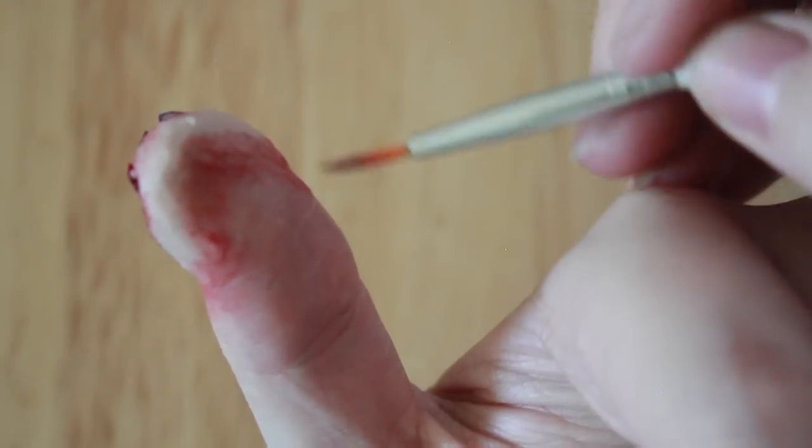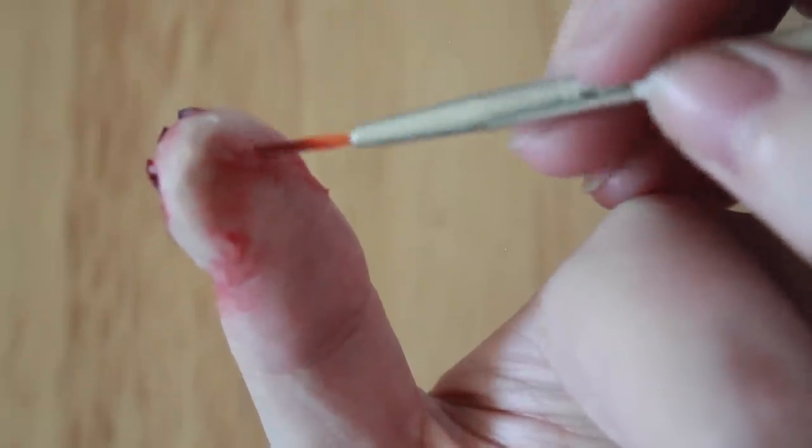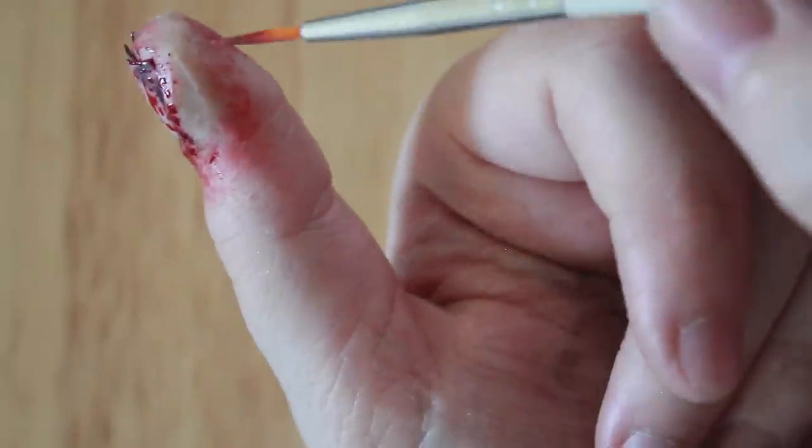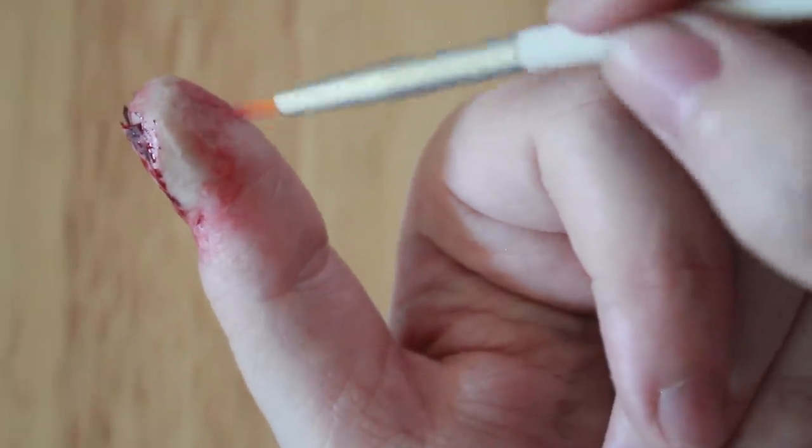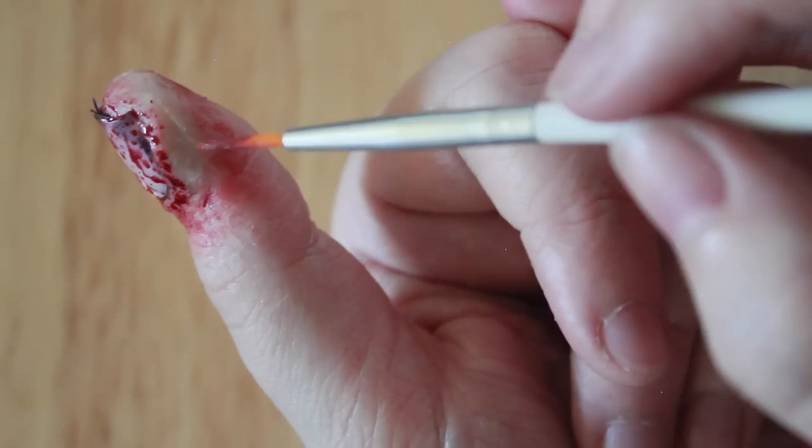To add the redness around the thumb there's three different things you can use. You can use the fake blood that you've been using at first. You could also use some cream makeup or you could use some lipstick and that's something that most people are likely to have. So either of them will work, whatever you have to hand and whatever works better for you.